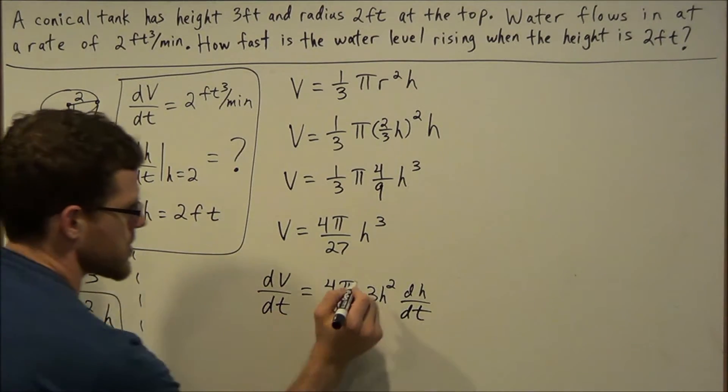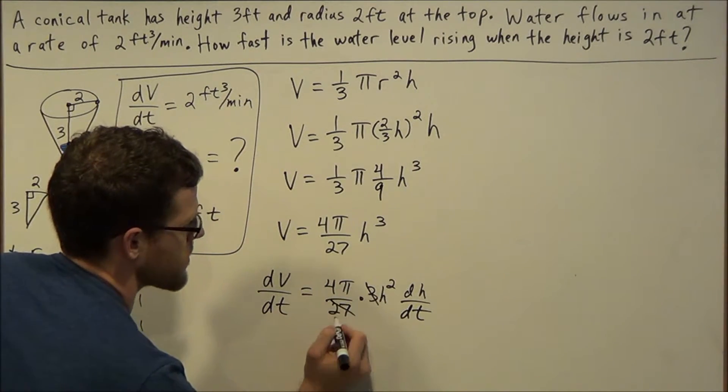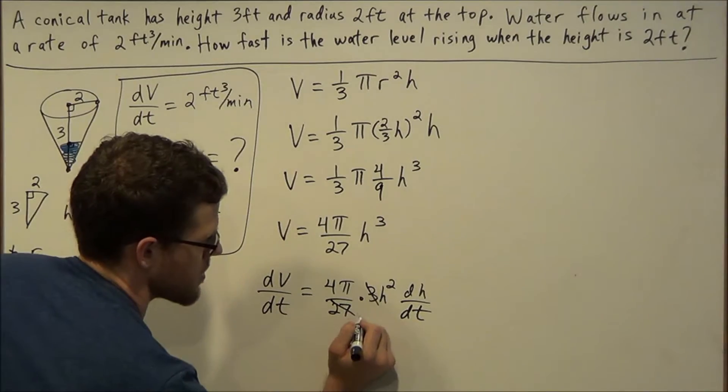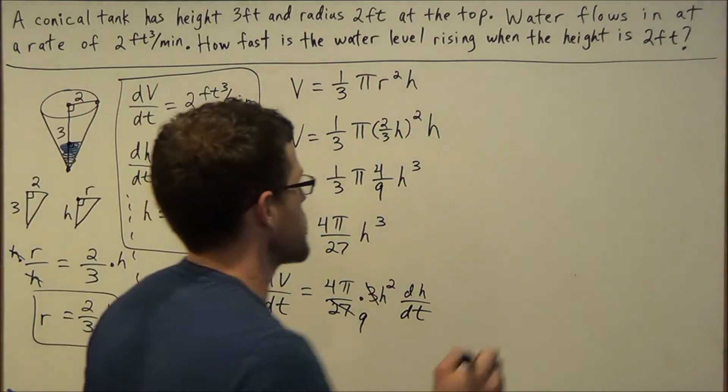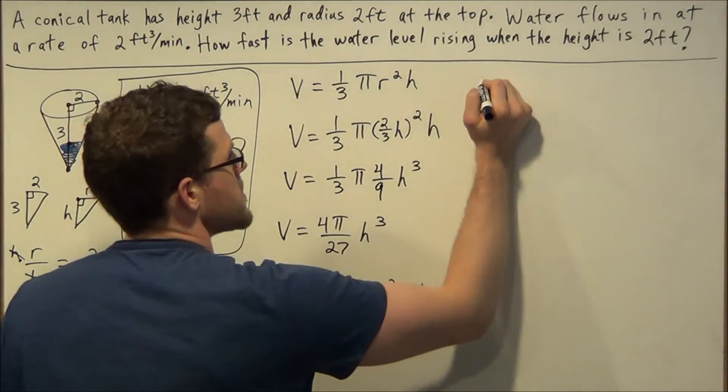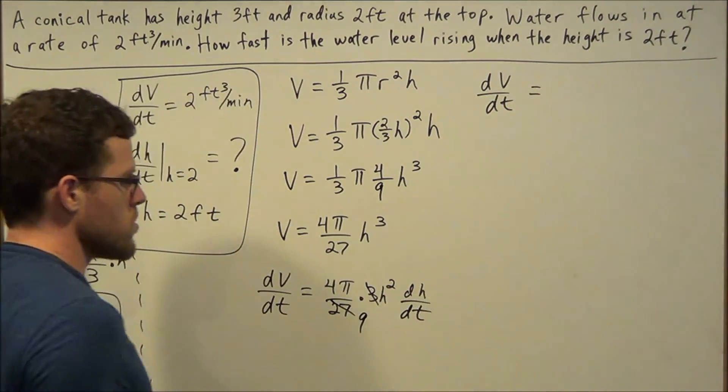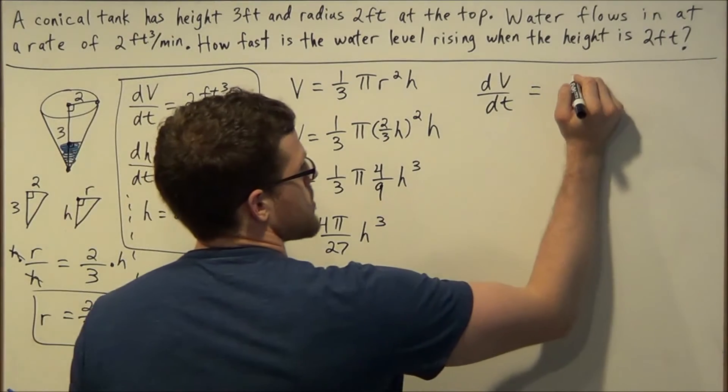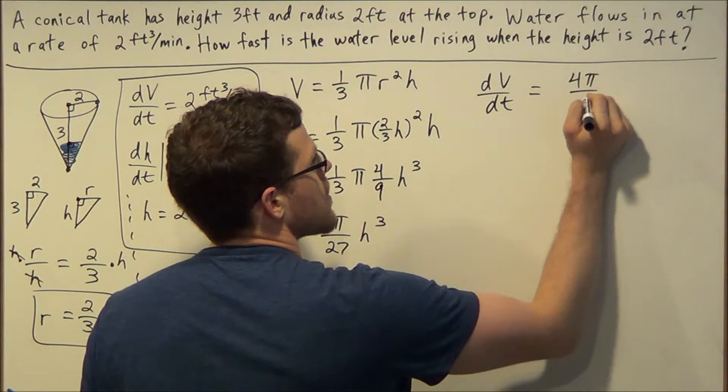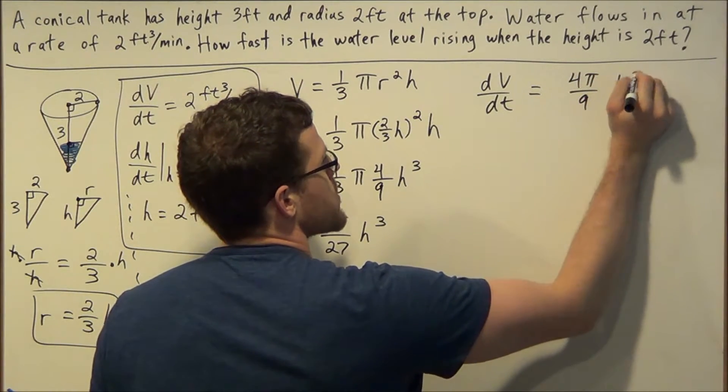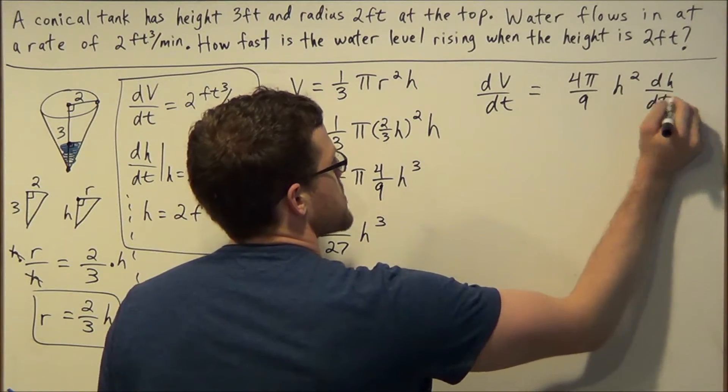What we could do is we could cancel out this factor. 3 over 27 reduces to 1 over 9. So we could write our derivative here: dV/dt = (4π/9)h² dh/dt.